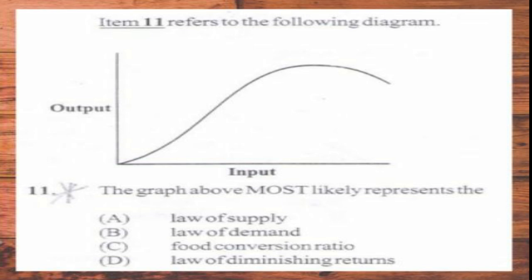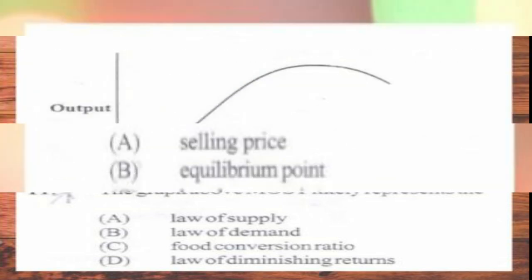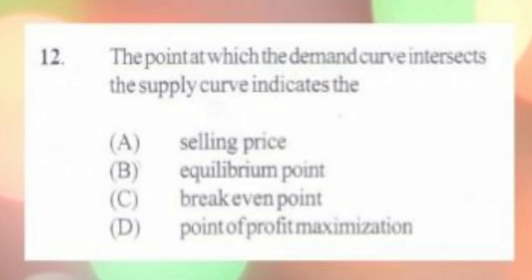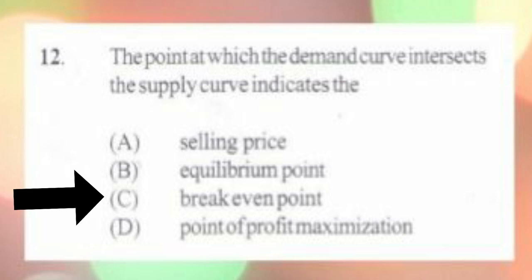Question number 12. The point at which the demand curve intersects the supply curve indicates: A. Selling price, B. Equilibrium price, C. Break-even point, D. Point of profit maximization. The answer is C, break-even point.